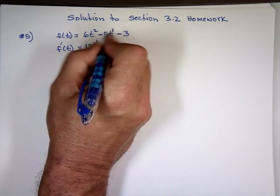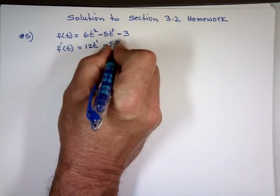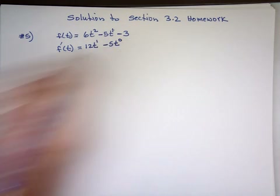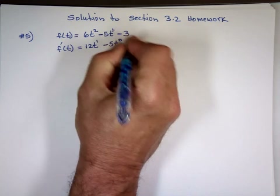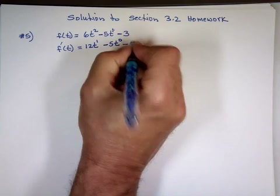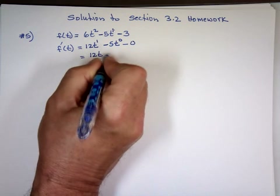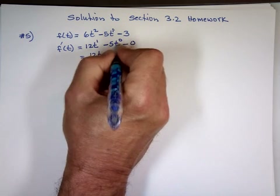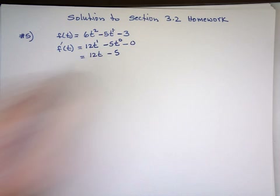5 times 1: 5t to the power 0. Minus the derivative of any constant, which is 0. So that would be 12t minus — t to the 0 is 1, 5 times 1 is 5 — so 12t minus 5.